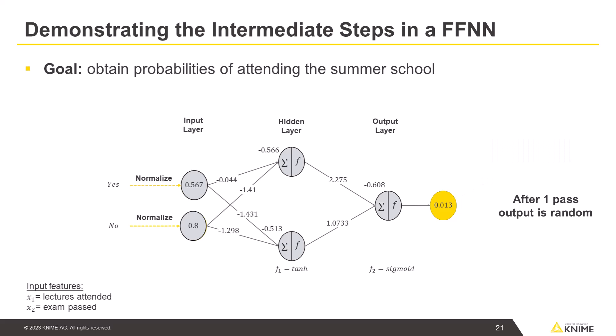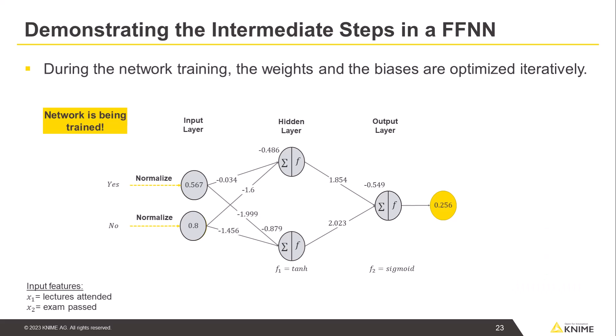After the first pass, the output will be random because we haven't trained the network yet. Therefore, we pass the network multiple known combinations of exam status, lecture attendance, and summer school attendance, and let the network learn the mapping between these. During network training, the weights and biases are optimized iteratively. The same training data are passed through the network multiple times to optimize these parameters based on the difference between the actual and predicted output, which is referred to as loss.